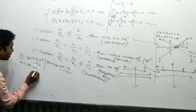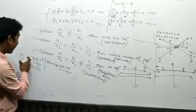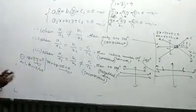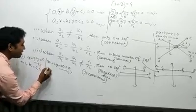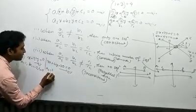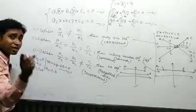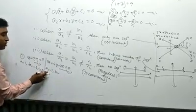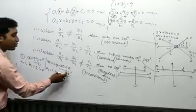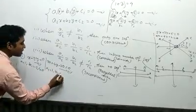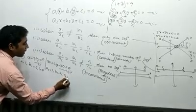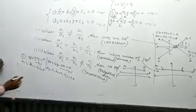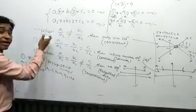For equation two: a₂ = 3, b₂ = 4, c₂ = −20. Now calculate the ratios: a₁/a₂ = 1/3, b₁/b₂ = −2/4 = −1/2, and c₁/c₂ = 0/−20 = 0.